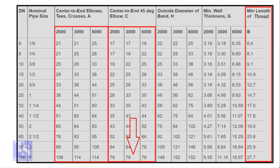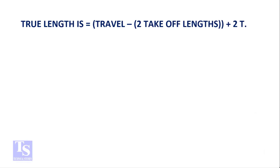The TDP — true depth of penetration — for both elbows is 27.7 millimeters, which will round to 28 millimeters. The formula for true length is: true length equals travel minus 2 times take-off plus 2 times TDP.